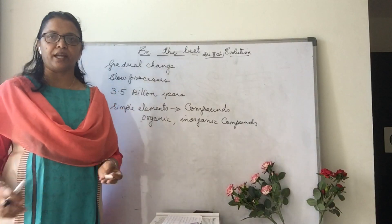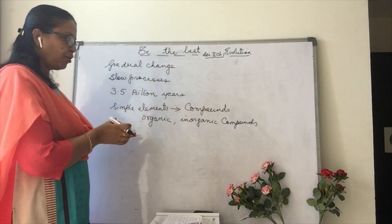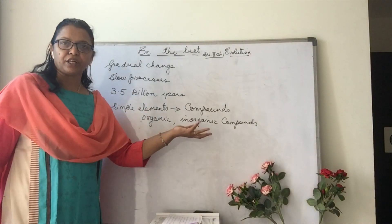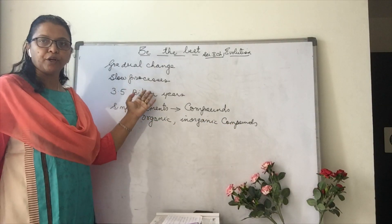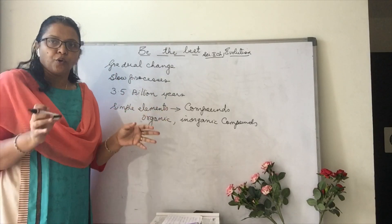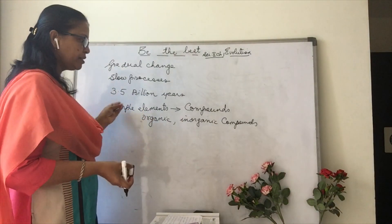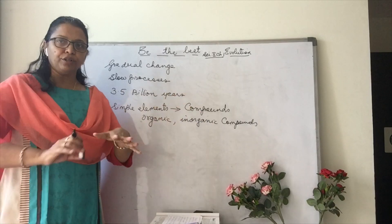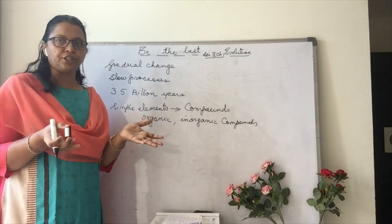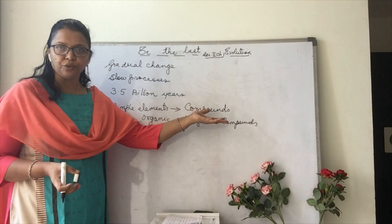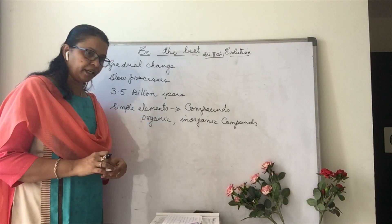Compounds containing carbon are called organic compounds; if there is no carbon, they are called inorganic compounds. About 3.5 billion years ago there was no life — only some simple elements were there. At that time the temperature was very high, and due to those conditions, simple elements converted into compounds, which later became organic and inorganic compounds.